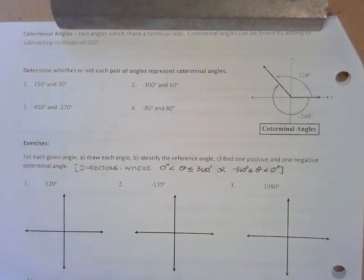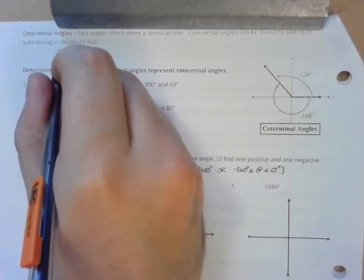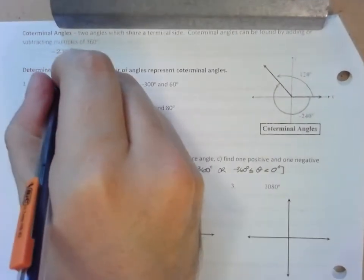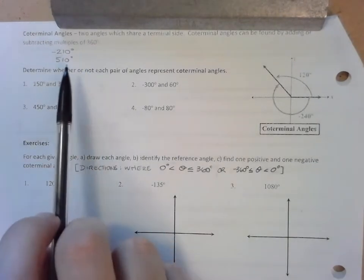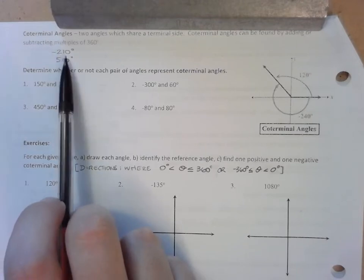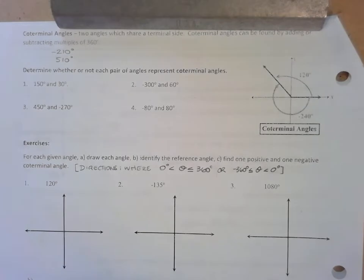Let's pick up with coterminal angles. In the previous section, the last exercise led us to believe that question three and question six were coterminal angles. The measures of those two angles were negative 210 degrees and positive 510 degrees. The definition of coterminal angles are angles that share the same terminal side. We found that both of these angles had a terminal side in quadrant two and had the same reference angle of 30 degrees.